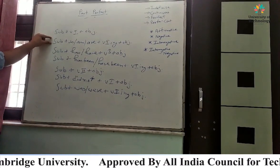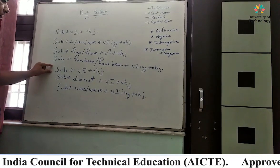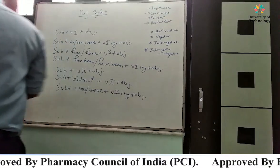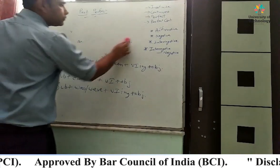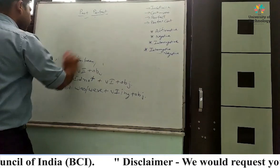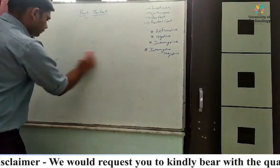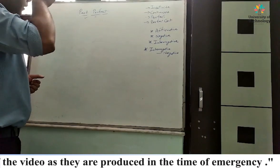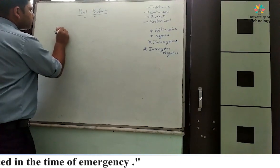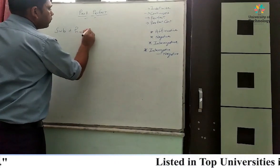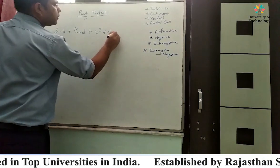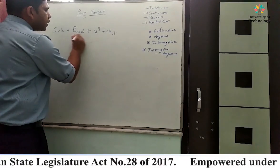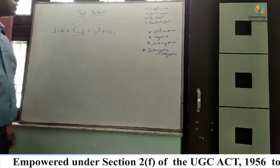So we have covered simple present tense, present continuous, present perfect, present perfect continuous, simple past tense, and past continuous. Today we will discuss past perfect. In past perfect, the structure is: subject plus had plus verb third form plus object.